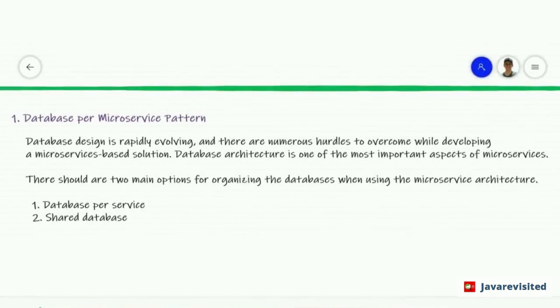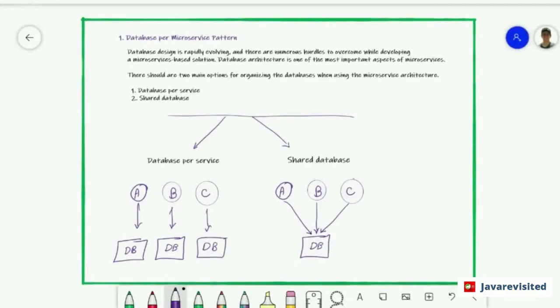The first is the database per microservices pattern. A database designed to rapidly evolve and there are numerous challenges to overcome while developing a microservices-based solution. Database architecture is one of the most important aspects of microservices. There are two main approaches for organizing databases when using a microservice architecture. The first one is database per service and the second one is a shared database.